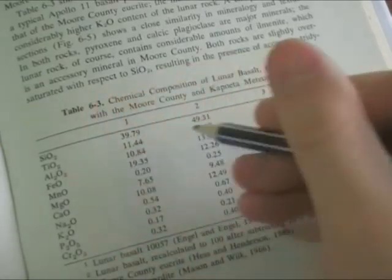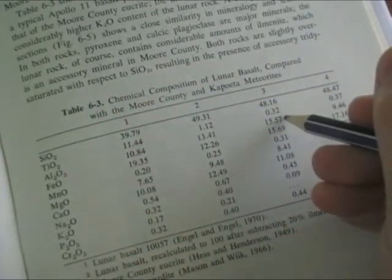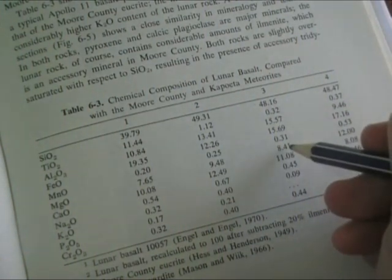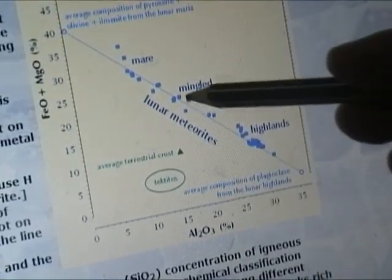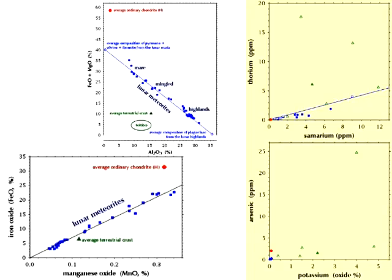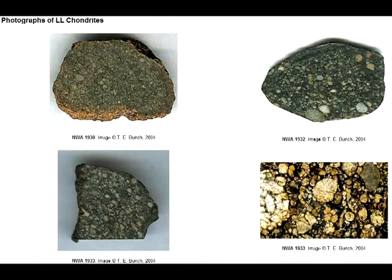We'll deal with those glass spherules later. For now, we'll use this chart as we go through the major elements that Webb insists make meteorites differ so much from the Apollo samples. And remember, Webb builds his entire claim that all meteorites are different to the Apollo samples purely on the chemical composition of one meteorite class — chondrites. Not meteorites in general, just chondrites.